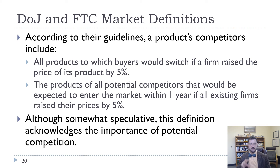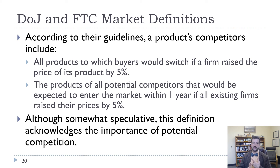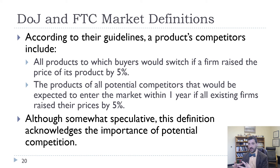According to the Department of Justice and the Federal Trade Commission, a product's competitors include all products to which buyers would switch if a firm raised its price by 5%, as well as products of all potential competitors expected to enter the market within one year if all existing firms raised their prices by 5%. This is a bit complicated because it includes not only existing firms consumers could switch to, but also potential firms that might enter if prices rise. We'll talk more about this potential competition later in the chapter.